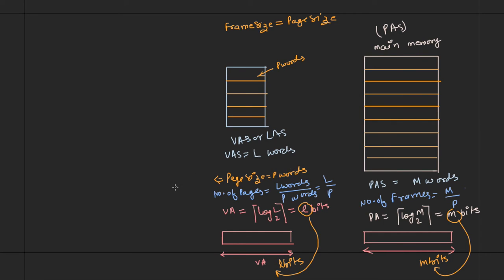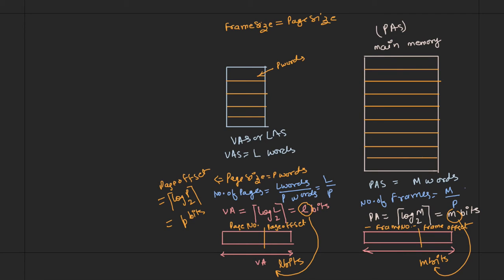The page offset is the ceiling of log base 2 of capital P, assumed to equal small p bits. This means the virtual address is divided into two parts: the page offset and the page number. The page offset occupies small p bits, and the page number occupies l minus p bits.